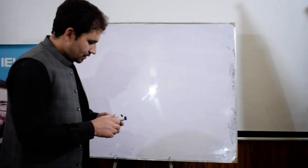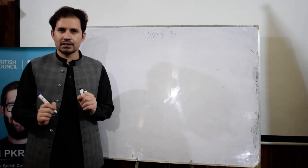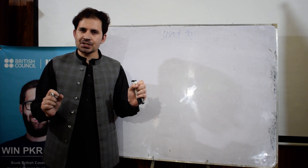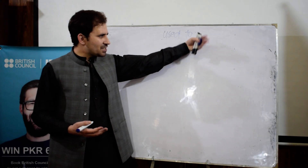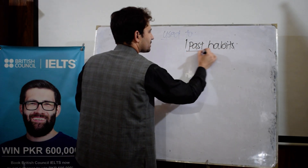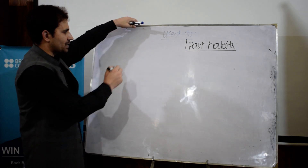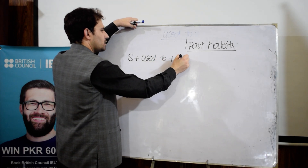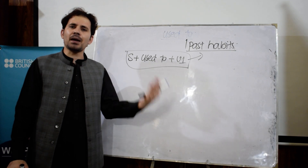The topic I have selected for today is 'used to' — it's a grammatical topic. We use it when you want to talk about your past habits, those habits that you had in the past but which do not exist now in the present. The structure is: subject + 'used to' + first form of the verb. This structure is used to talk about past habits and past activities.